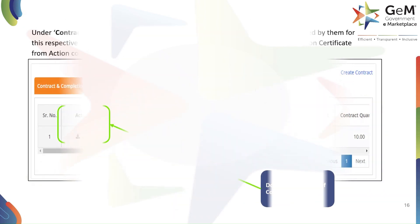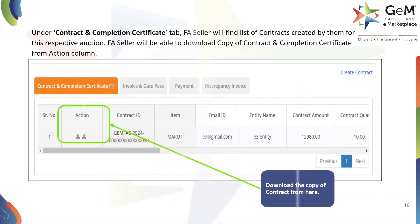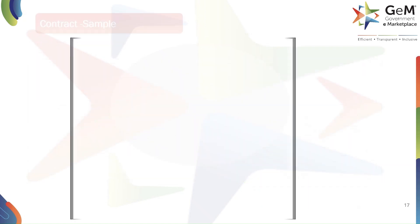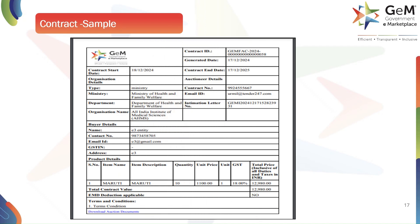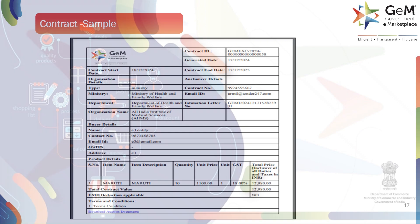Once created, contracts can be found under the Contract and Completion Certificate tab. The system will now generate a contract document. This is a sample of what the generated contract looks like — it contains all the essential details of the agreement, including the contract ID, dates, buyer details, and a summary of the item and its value. This document serves as a formal agreement between the FA seller and the FA buyer.